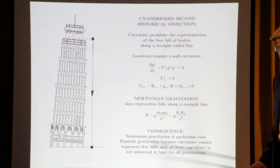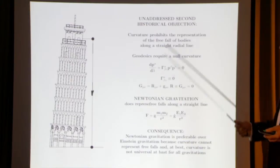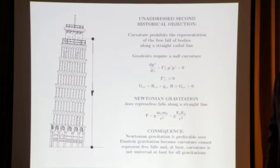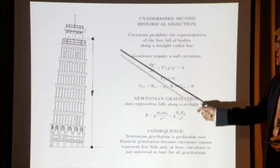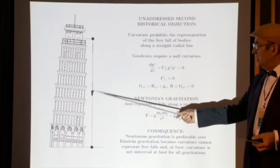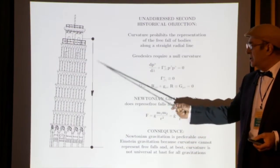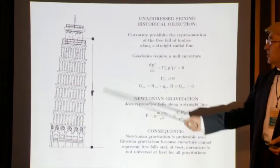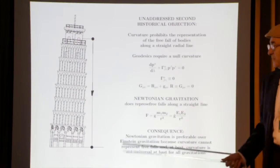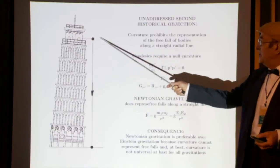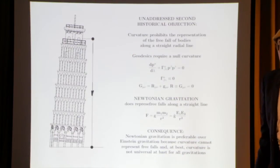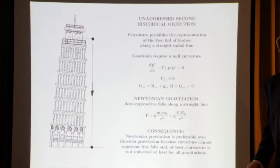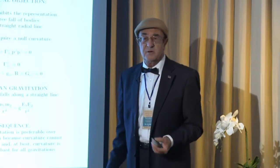Another historical objection, also totally unaddressed, is that curvature positively cannot allow the representation of a fundamental event in gravitation: the freefall of an object along a straight radial line. Here is the Tower of Pisa — Galileo went to the top for a historical test. Already since Galileo, we can see the straight character of freefall. There is no possibility to represent this event with a curved space — none.